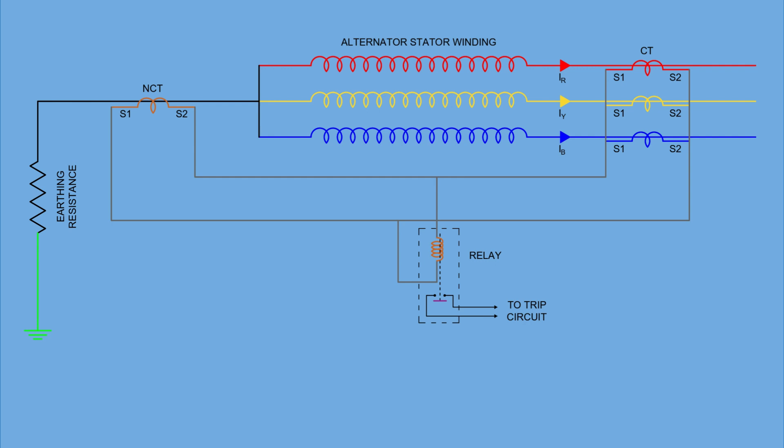Now, let's talk about faults external to the protected zone. For example, an earth fault at point F2 in phase B. In such cases, the fault current flows from the alternator through the fault and returns through the neutral, and this total current is still balanced, meaning the sum of phase currents is equal to the neutral current. The current sensed by the line CT in phase B is the same as that sensed by the neutral CT. These currents cancel each other out, so no differential current appears, and the relay does not operate. That's why external faults are not detected by this scheme.